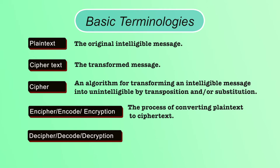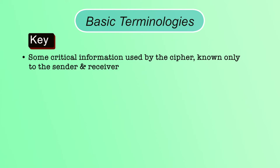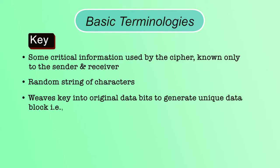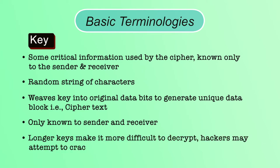Decipher, decoding, or decryption is the process of converting ciphertext to plaintext. A key is critical information used by the cipher to convert plaintext to ciphertext — it is a random string of characters. Security of the cipher depends on the key, which should only be known to the sender and receiver. If an attacker knows the key, they can easily identify the original message. Shorter keys are vulnerable to brute force attack — longer keys are difficult to decrypt.